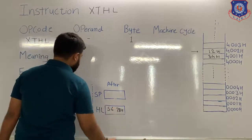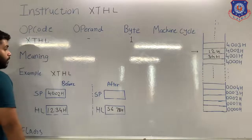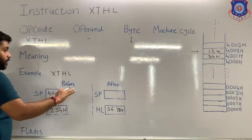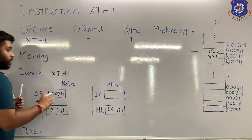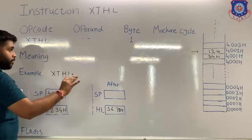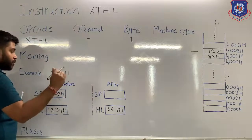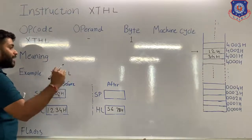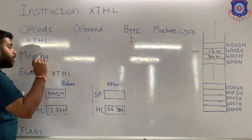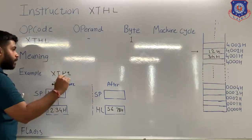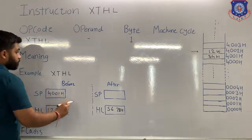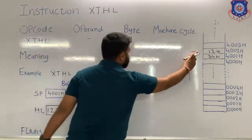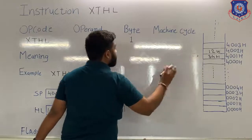After the exchange of the HL and the stack is done, the microprocessor will decrement the stack pointer by 1, so again the value of the stack pointer will become 4001H and it will point at the same location.